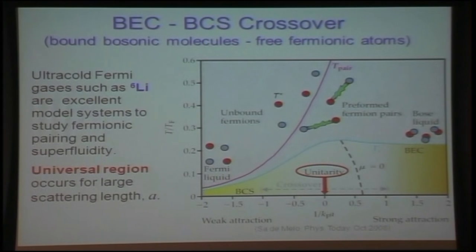So just a little bit about the BEC-BCS crossover, where we go from bound bosonic molecules to free fermionic atoms. In ultra-cold Fermi gases, like lithium-6, this provides a very nice model system to study fermionic pairing and superfluidity. As you go through this region of unitarity from BEC-bound molecules here to BCS, where you have long-range fermionic pairs, for example.